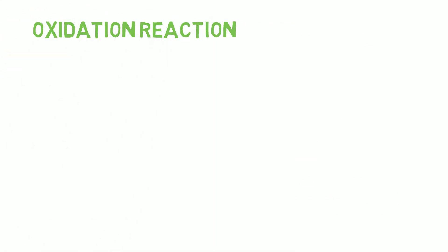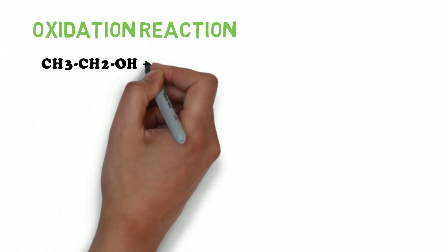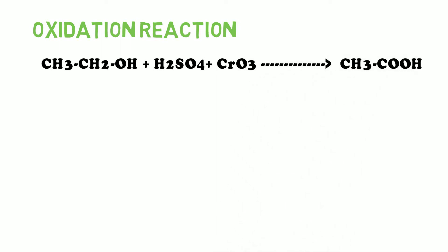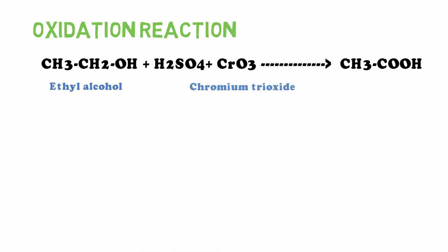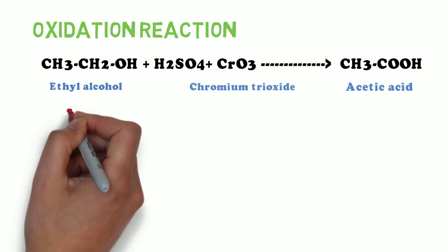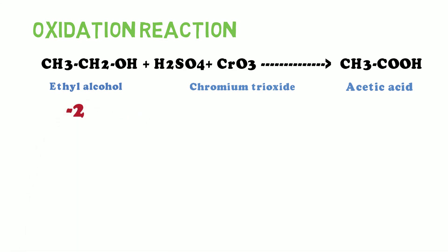An example of oxidation reaction is ethyl alcohol treated with H2SO4 in the presence of chromium trioxide. Chromium trioxide is an acidic anhydride of chromic acid. It is dark purple in color. We get acetic acid.